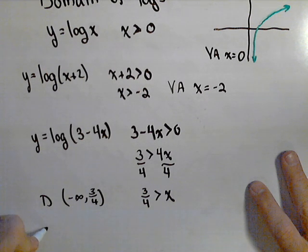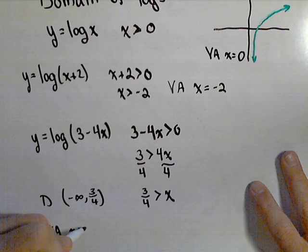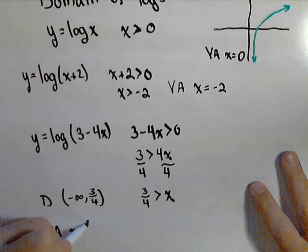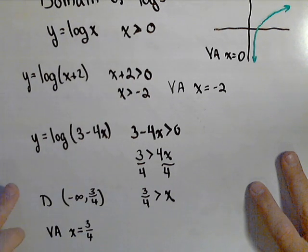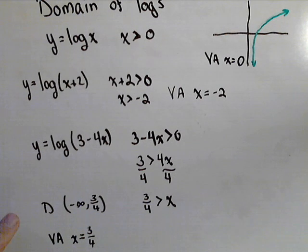Again, our vertical asymptote is at the point that makes a zero in the log. So in this case, it's at x equals happens at three-fourths. So that's how we can look at the domain and identify a vertical asymptote. I want to do a little bit more interesting example where maybe we have a quadratic in our logarithm and we got to determine the domain.